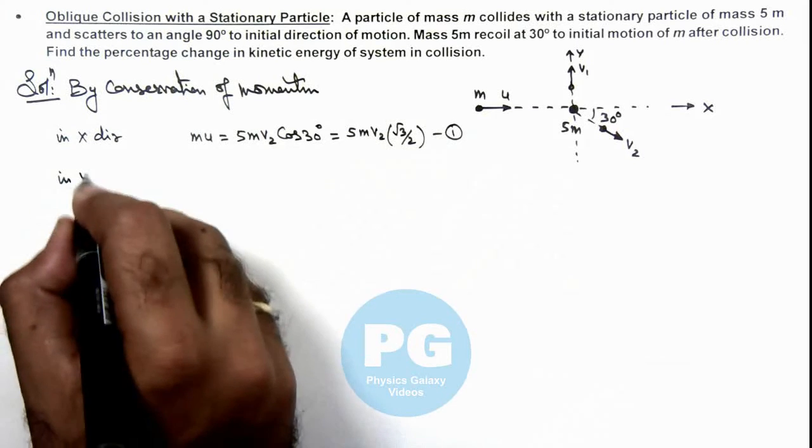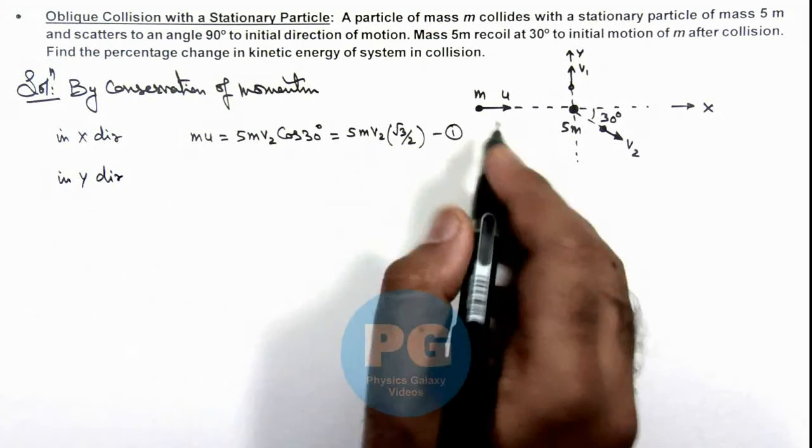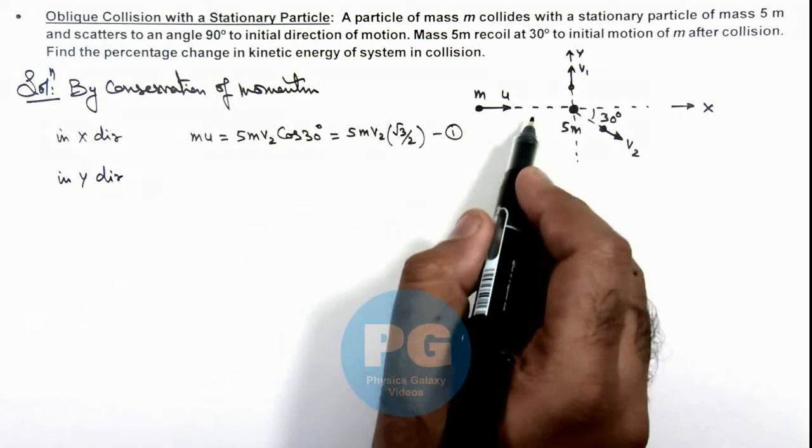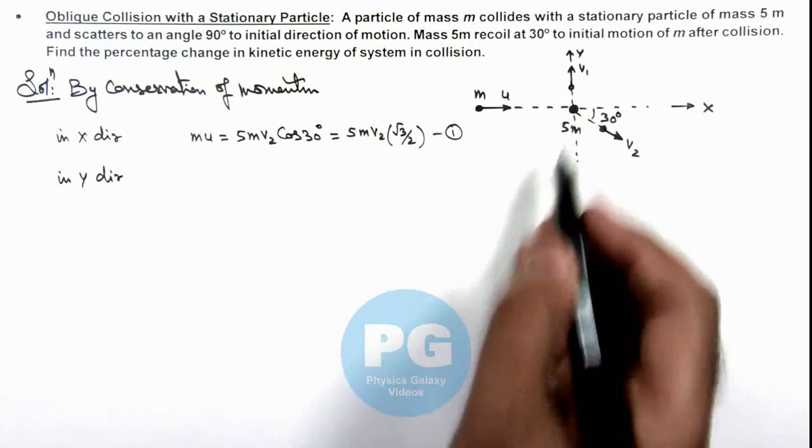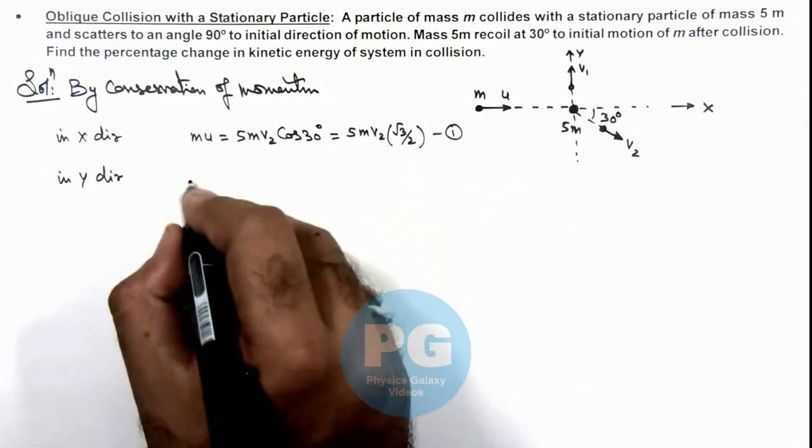And in y direction we can see as initially there was not any momentum, so final momentum must be equal and opposite so it'll result zero momentum.